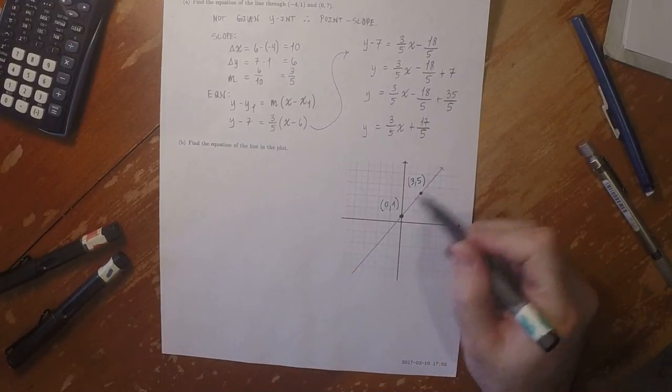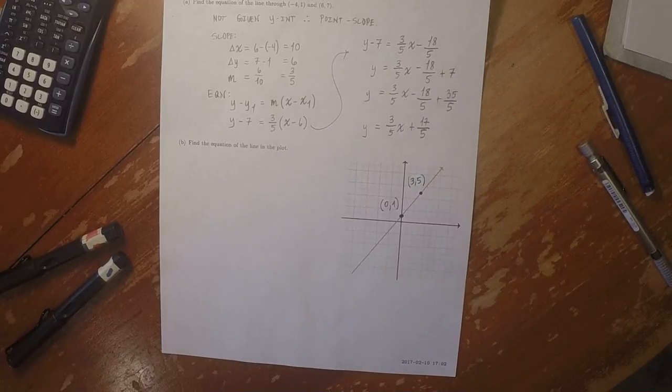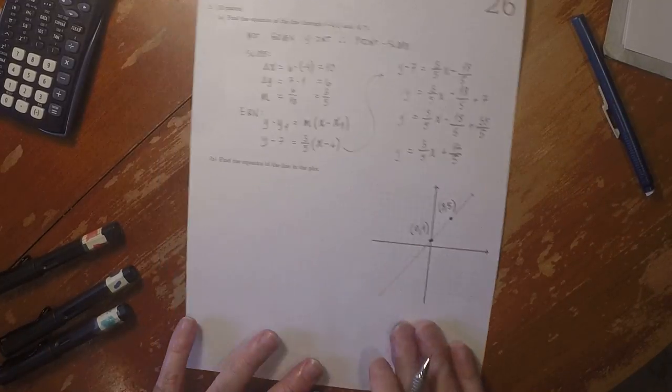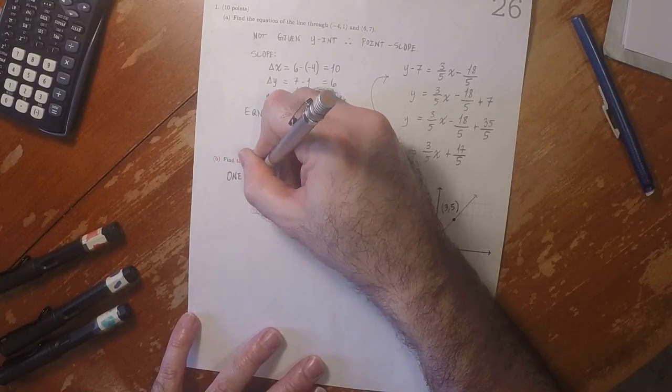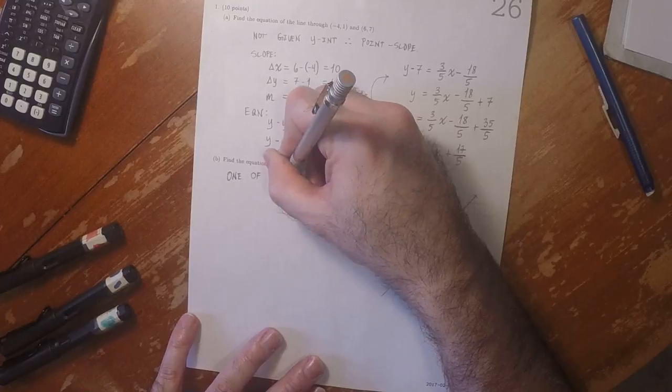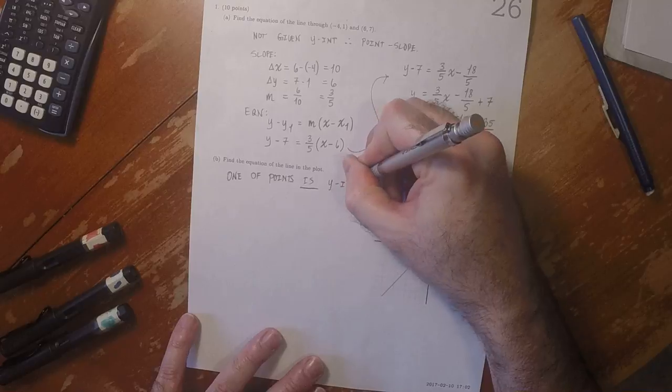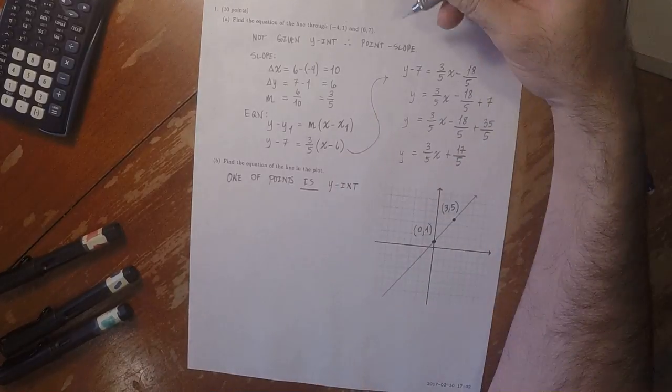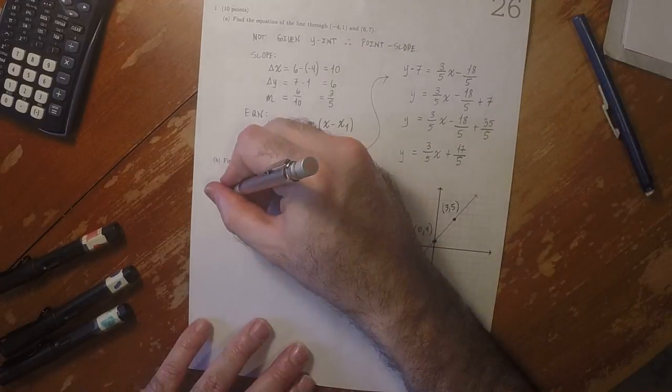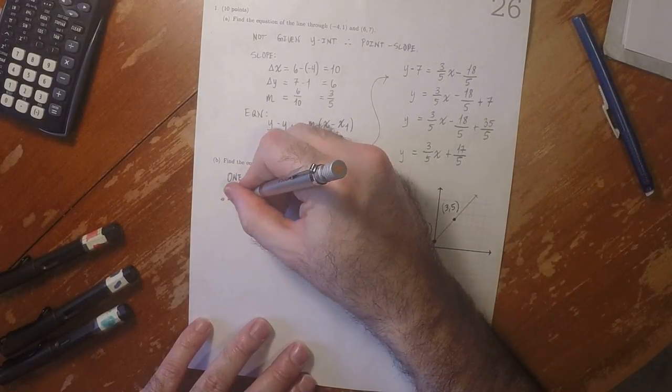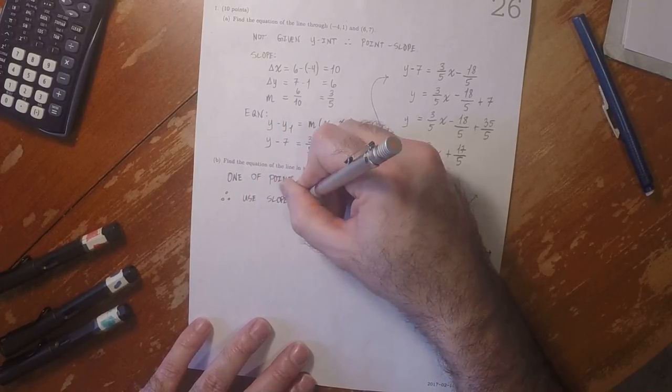So we found two points on the line. In principle we could do it just like part a, but one of the points is a y-intercept, so instead of using the point-slope formulation we can use the slope-intercept form, which is slightly easier.